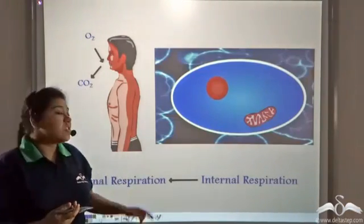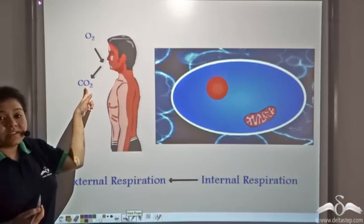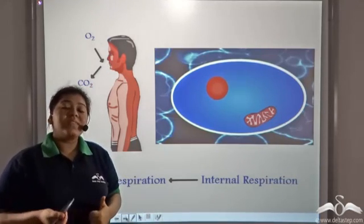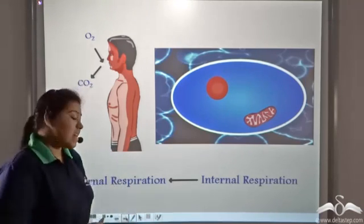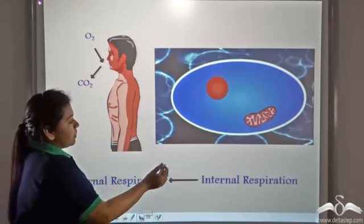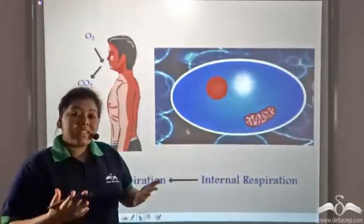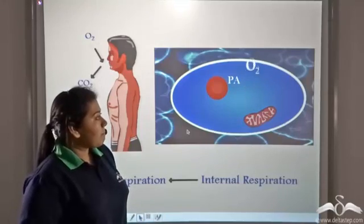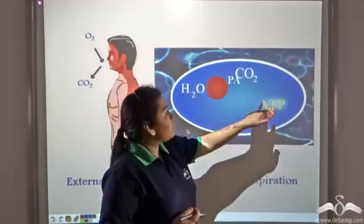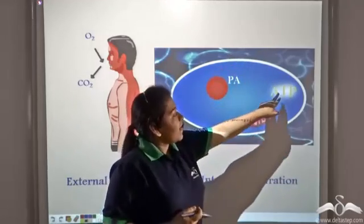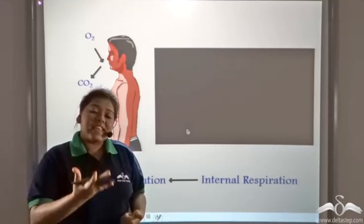How is this oxygen that we are breathing in getting converted to carbon dioxide? Let us look into the cellular level. Let us see what is happening inside the cells. This is a cell. The oxygen that we breathe in comes to the cell and gets converted to carbon dioxide and energy and this carbon dioxide we exhale out.